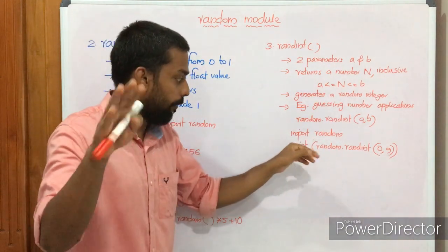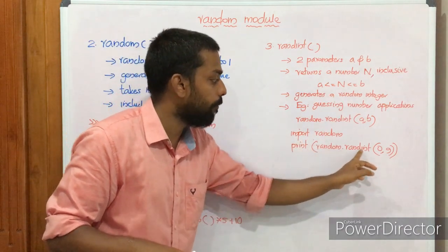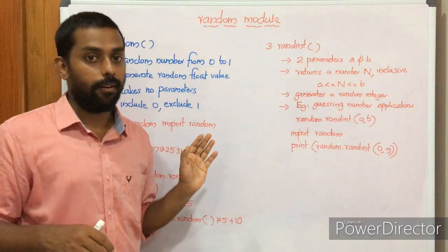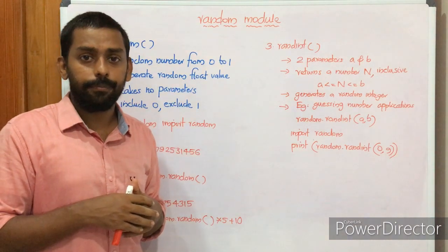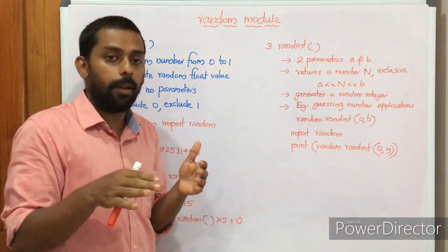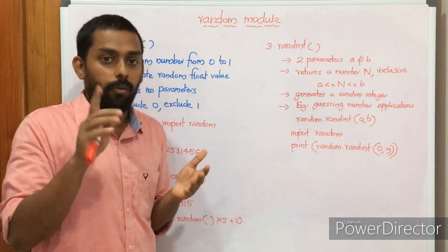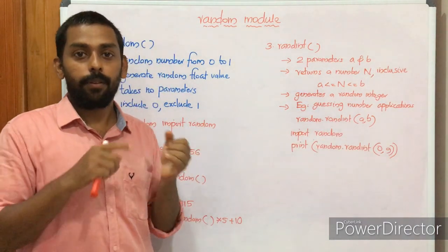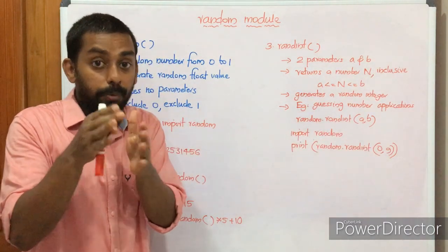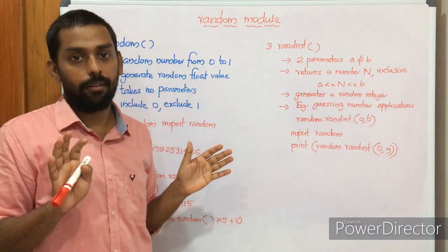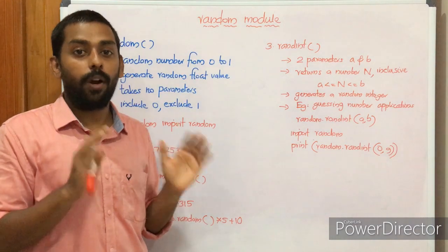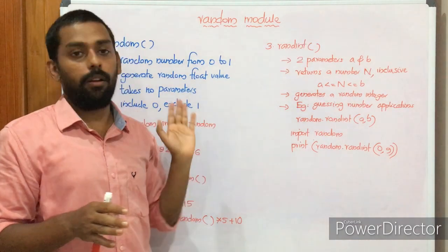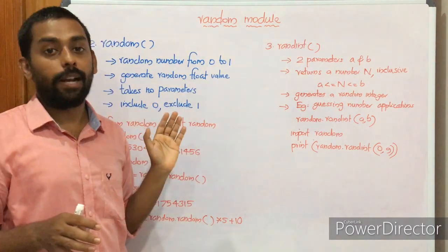Looking at the example: import random, then print(random.randint(0, 9)). Here A is 0 and B is 9. For the first execution it might print 1; for the second time it might print 5. The possible values are 0 to 9, and 9 is also included — unlike randrange where the upper limit is excluded. So randint considers both limits inclusive.